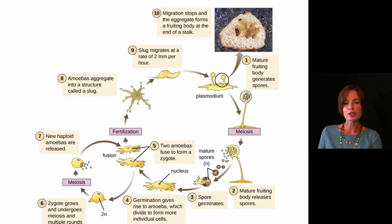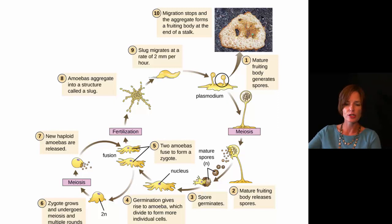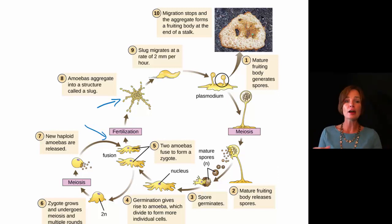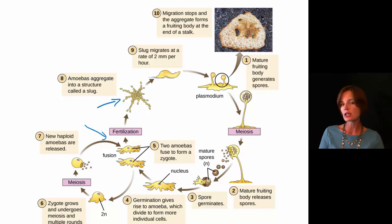Looking at the life cycle of the cellular slime molds, we can see that the cells are actually divided — they are not going to be a mass of nuclei altogether. Notice that towards the bottom you can see individual cells, but they're going to collect and aggregate together when conditions become rough — specifically when nutrients are limiting and there's not much food.